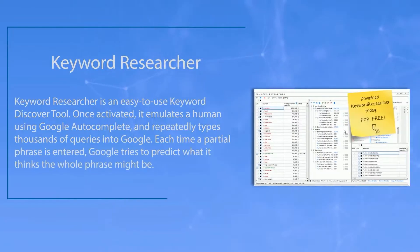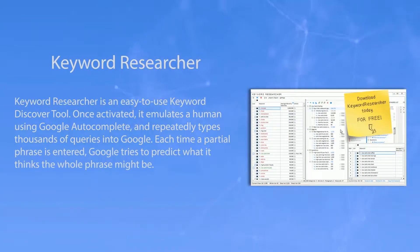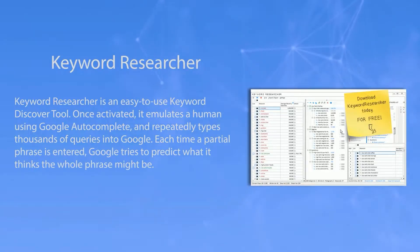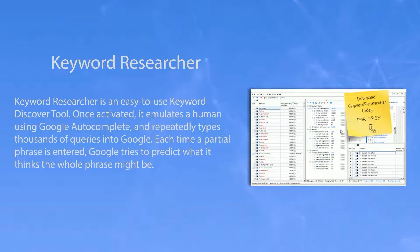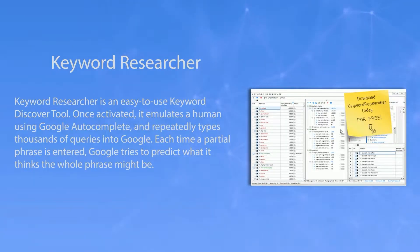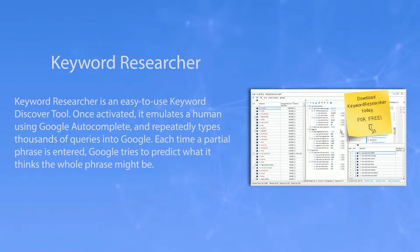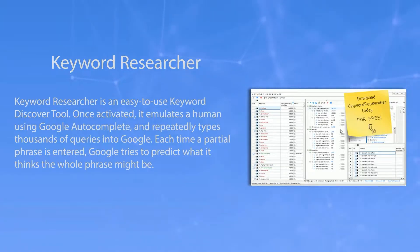What exactly is this new keyword discovery tool called Keyword Researcher? Keyword Researcher is an easy-to-use keyword discovery tool. Once activated, it emulates a human using Google Autocomplete and repeatedly types thousands of queries into Google. Each time a partial phrase is entered, Google tries to predict what it thinks the whole phrase might be.